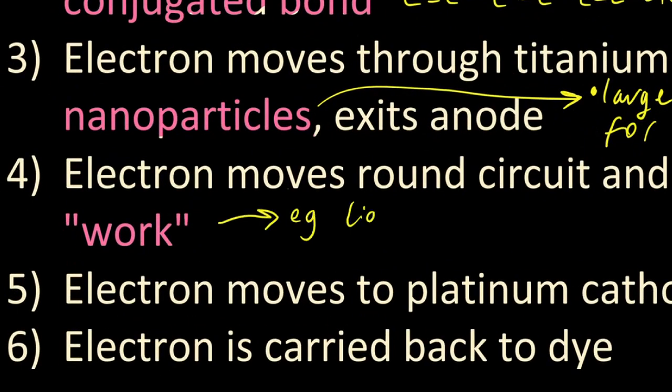The electron moves around the circuit and does work, and so work is another name for some electrical activity such as lighting up a bulb or powering something.